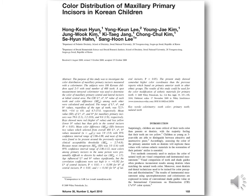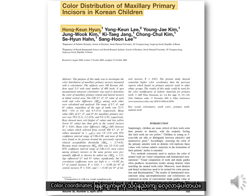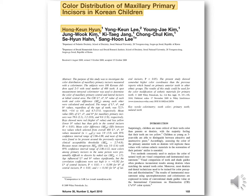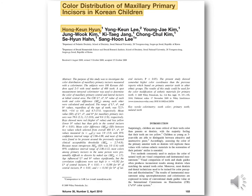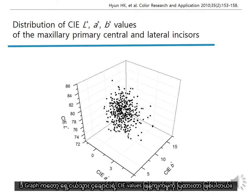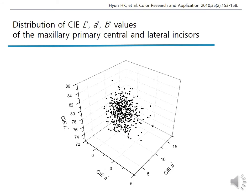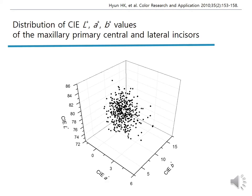I investigated the distribution of color coordinates of Korean maxillary primary incisors from a scientific point of view using this colorimeter and the CIE color system. This graph shows the distribution of CIE values for incisors. We can see their colorimetric values fall within a small range.